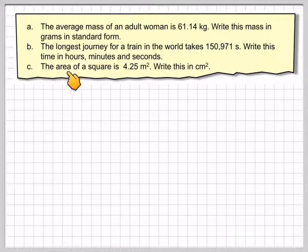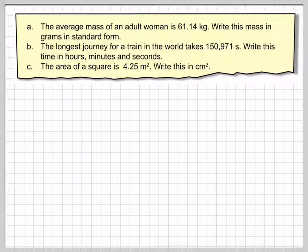The area of a square is 4.25 metres squared. Write this in centimetres squared.